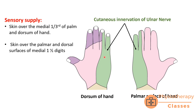For cutaneous innervation: the palmar cutaneous branch supplies the medial one-third of the palm. The dorsal cutaneous branch supplies the medial one-third of the dorsum of the hand. The skin over the medial one and a half digits — on both palmar and dorsal surfaces — is supplied by the digital branches coming from the superficial branch of the ulnar nerve.